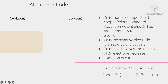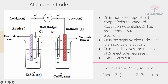At the zinc electrode on the left, we focus on the zinc electrode. Zinc is more electropositive than copper. If we refer to the standard reduction potential table, zinc is more electropositive than copper, meaning it is easier for zinc to release electrons compared to copper. So zinc has more tendency to release electrons.